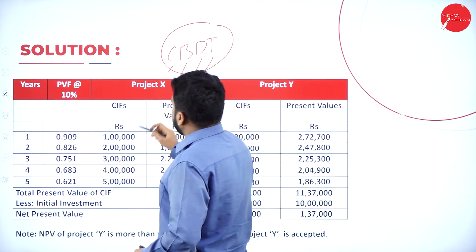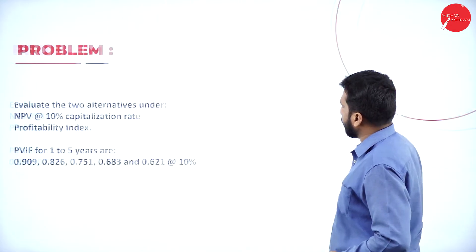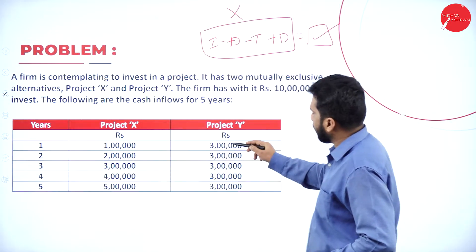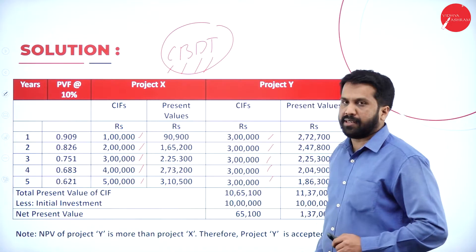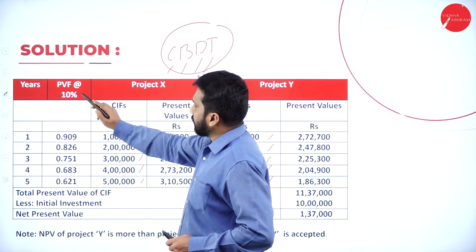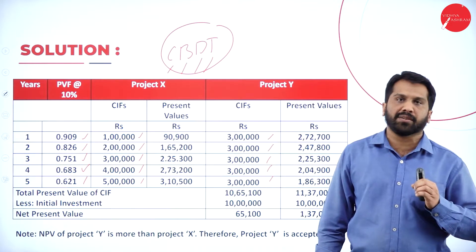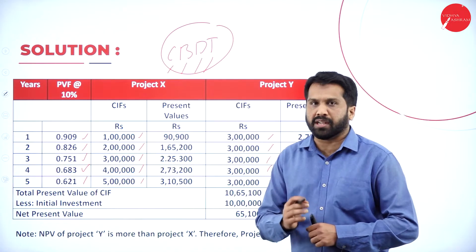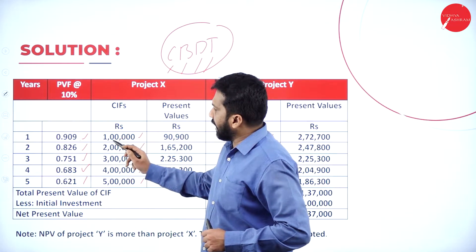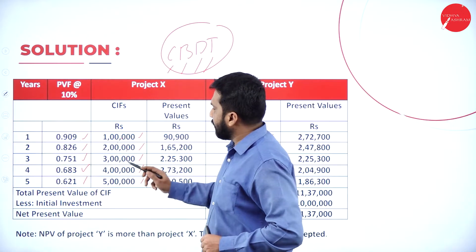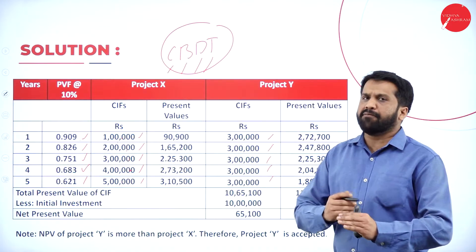For project X, the cash inflows for years 1 through 5 are: 1 lakh, 2 lakh, 3 lakh, 4 lakh, and 5 lakh. For project Y, the inflows are 3 lakh each year for all 5 years. The PV factors at 10% are 0.90, 0.826, 0.751, 0.683, and 0.621. We multiply each year's cash inflow by the corresponding PV factor.